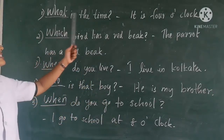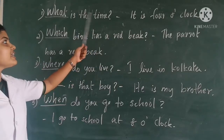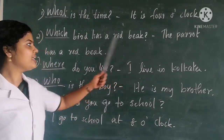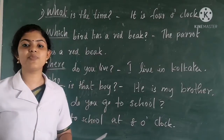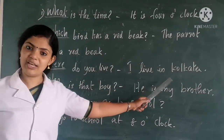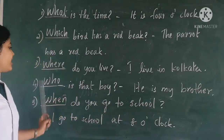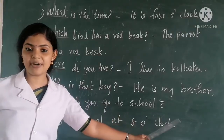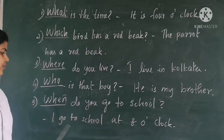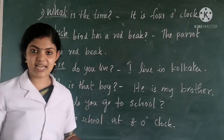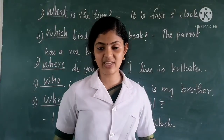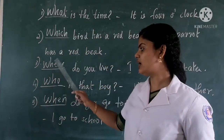Let me read the question and answers once more. What is the time? It is 4 o'clock — we use WHAT to get information. Which bird has a red beak? The parrot has a red beak — we use WHICH for choice. Where do you live? I live in Kolkata — we use WHERE for place. Who is that boy? He is my brother — we use WHO for a person. When do you go to school? I go to school at 8 o'clock — we use WHEN for time. These are the question words we learnt today: what, which, where, who, and when.